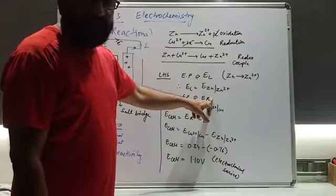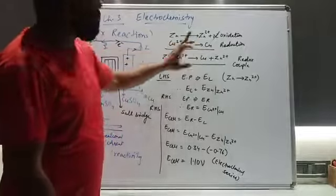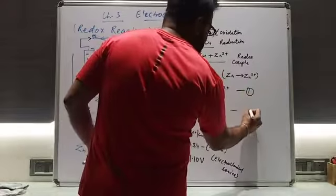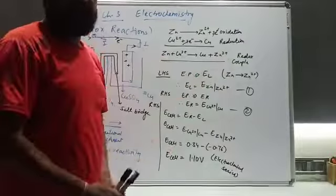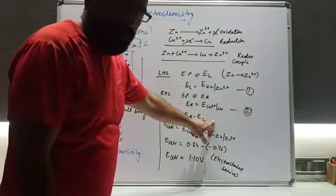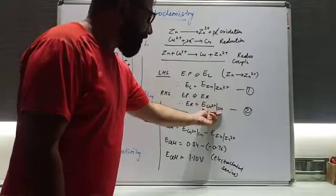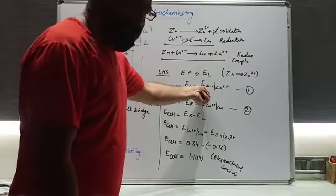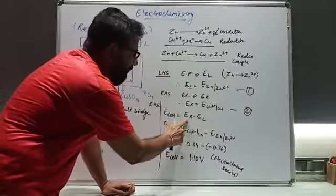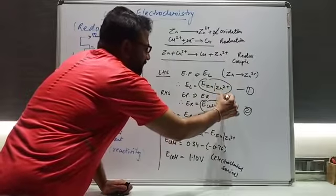The right-hand side electrode potential is denoted as E_R, which equals E(Cu²⁺ → Cu), because reduction is taking place on the right-hand side. Now we need to find the total potential of the cell — that is, the EMF (electromotive force) of the cell. The EMF of the cell equals E_R minus E_L, meaning the electrode potential of the right-hand side minus that of the left-hand side. Substituting, E_cell = E(Cu²⁺ → Cu) − E(Zn → Zn²⁺).